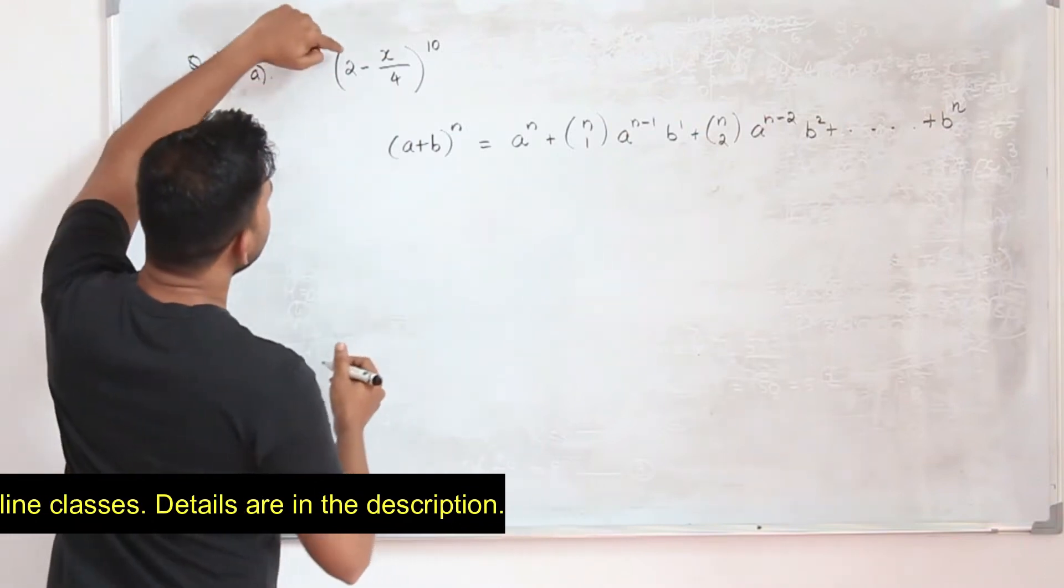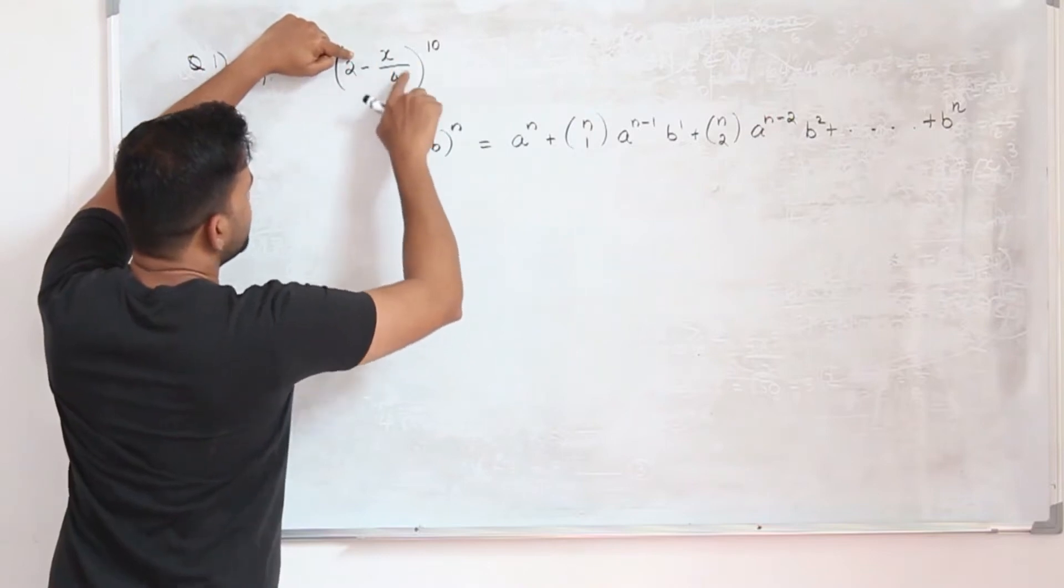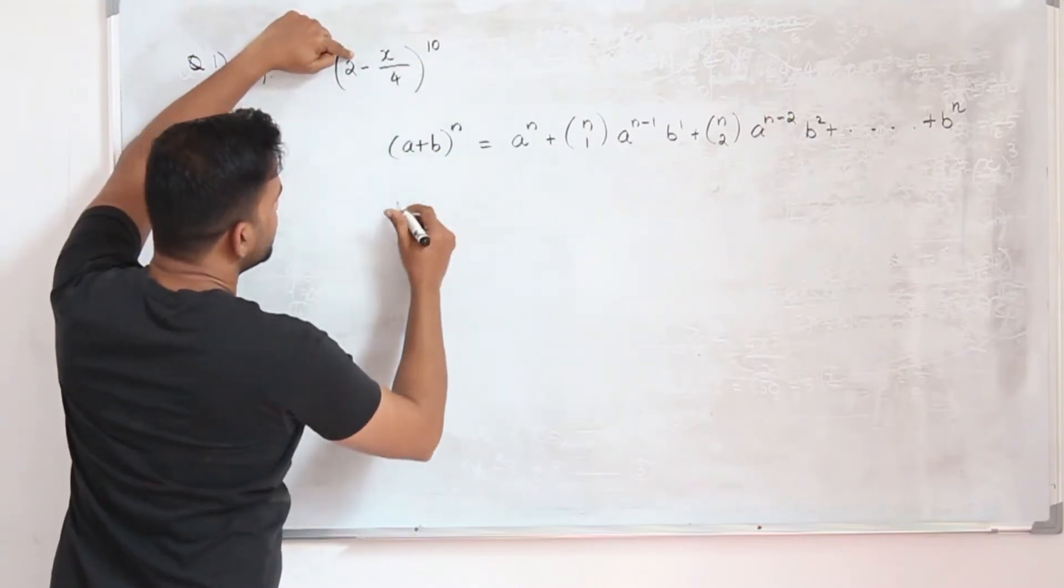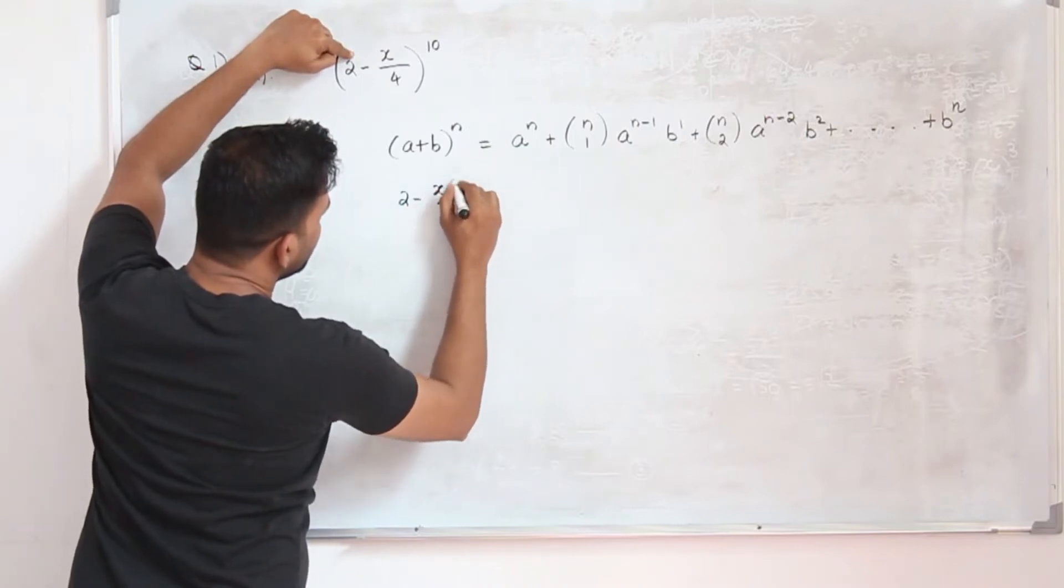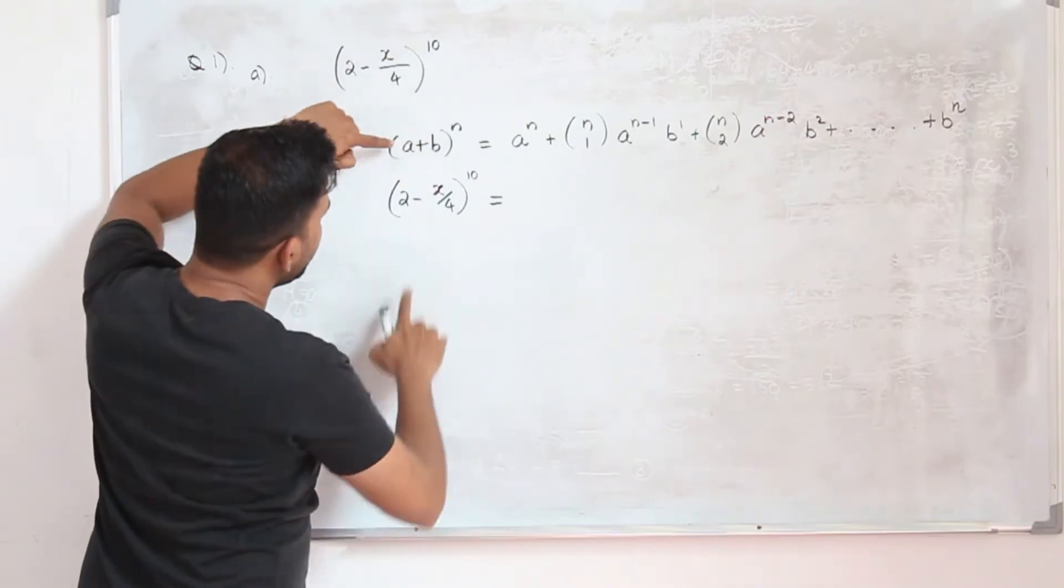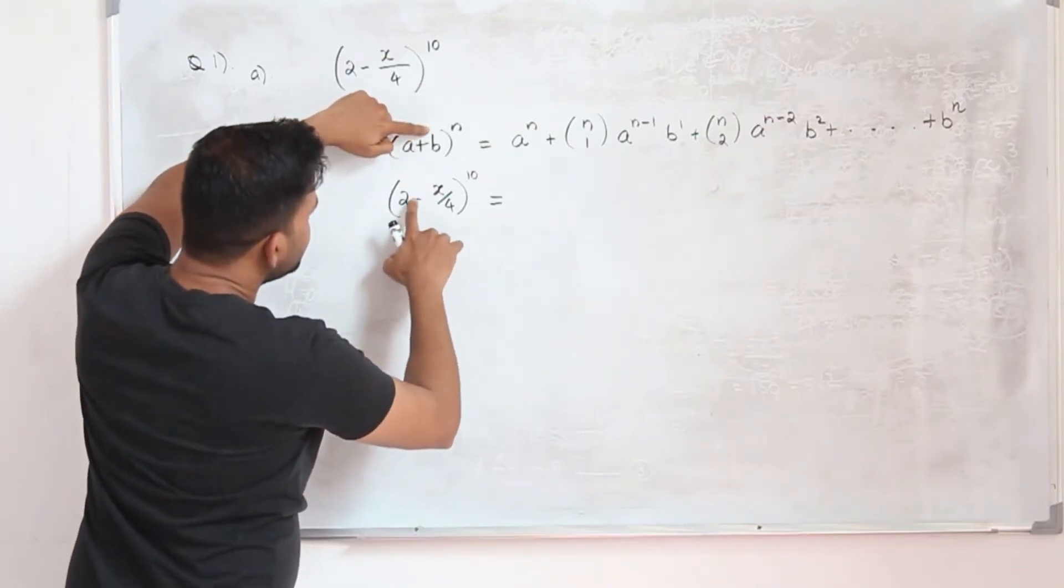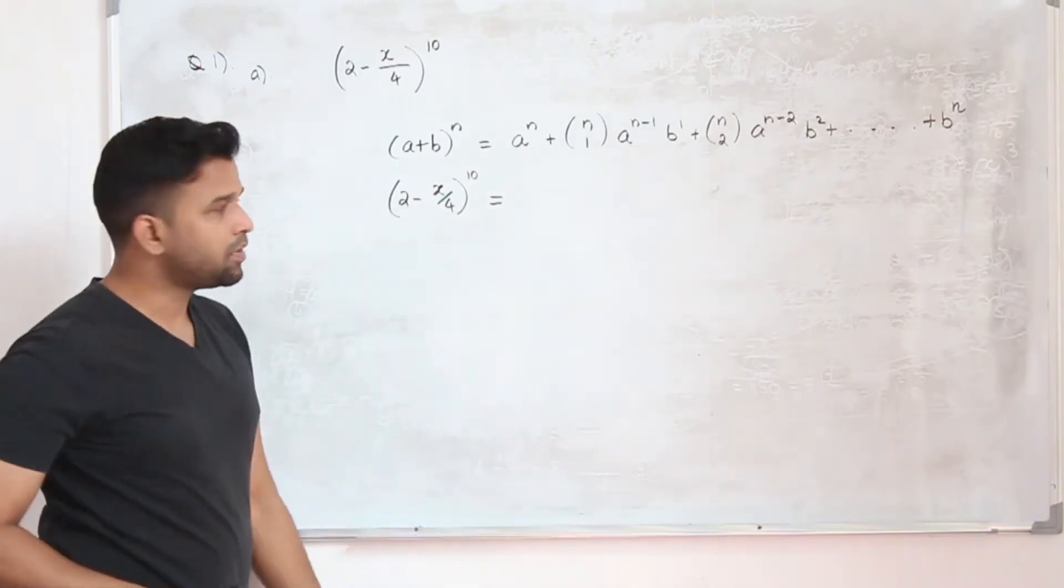So your a is 2, b you can take as -x/4. Take this term together with the sign, -x/4. So (2 - x/4)^10, your n is 10, a is 2, b is -x/4.